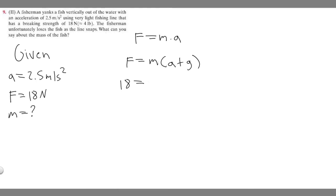If we plug everything in, 18 equals the mass, which is just m, times a, which is 2.5 plus the force of gravity. You need to know that gravity is 9.8 meters per second squared. So we're going to plug in 9.8.